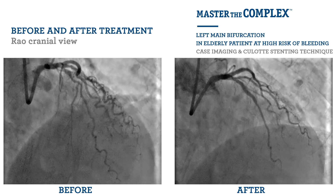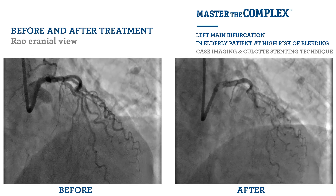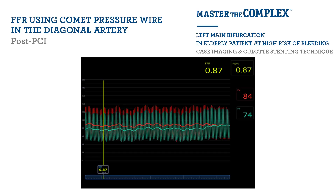There has been some plaque shift into the first diagonal branch. Given the size and importance of this branch, we elected to interrogate the significance of the plaque shift using the comet pressure wire. Using intravenous adenosine to achieve maximal hyperaemia, the FFR was 0.87, which is well above the ischaemic threshold, and therefore this branch did not require any intervention.